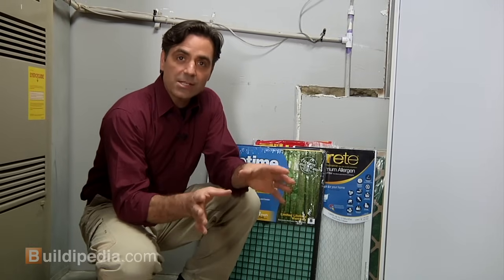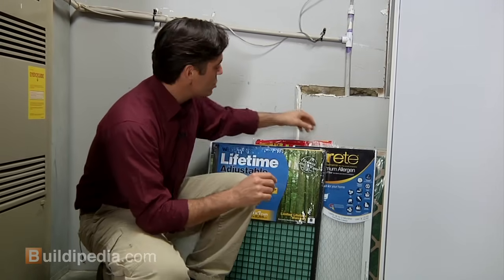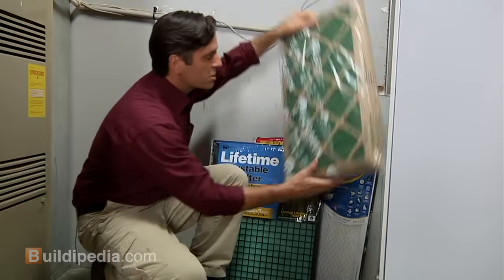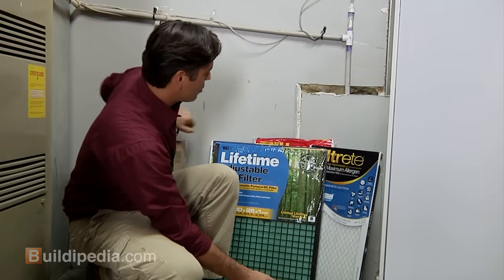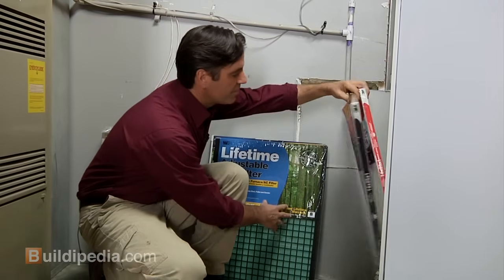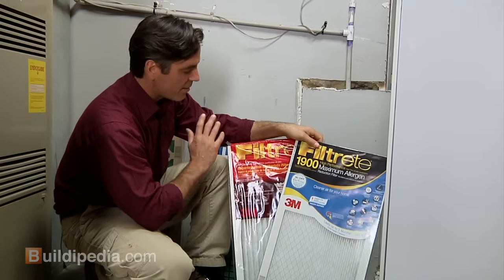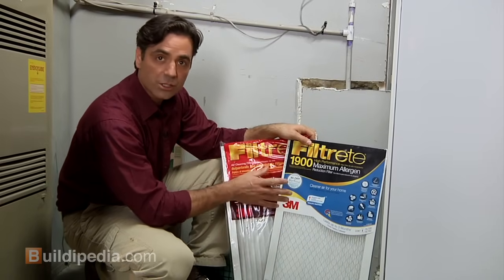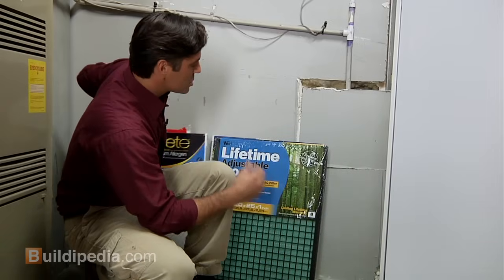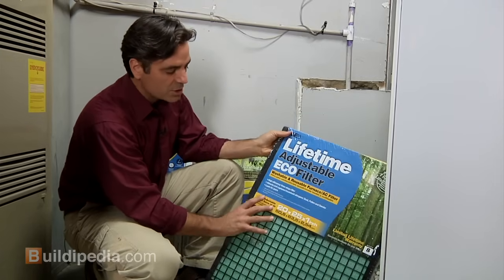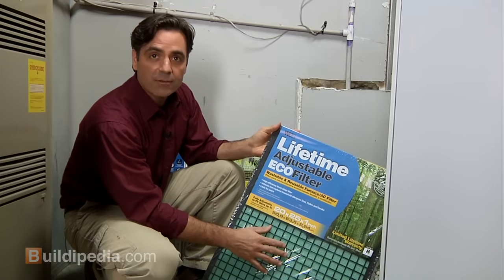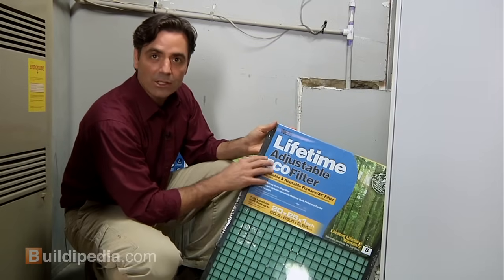Now, one maintenance item that any homeowner can do is changing the filter on their system. And you have lots of choices. Once you figure out exactly what size filter you need, you can choose a relatively inexpensive filter like this. This will last about 30 days, and they come in packages of several, usually. Or you can choose a more expensive replaceable filter like these. These filters have varying levels of filtration to take out different contaminants in the air. Those last about 90 days. And then you can also choose a filter like this one, which is cleanable. You can take this out about every 90 days and wash it out and then put it back into your furnace.